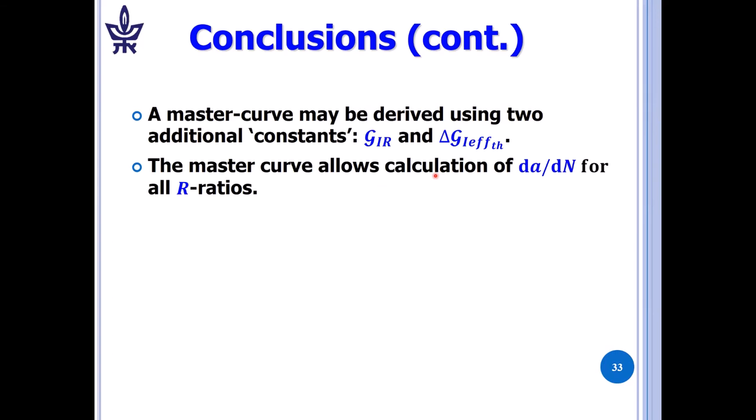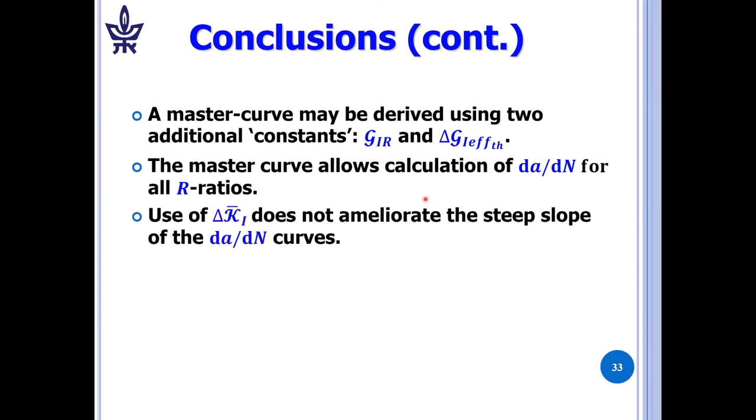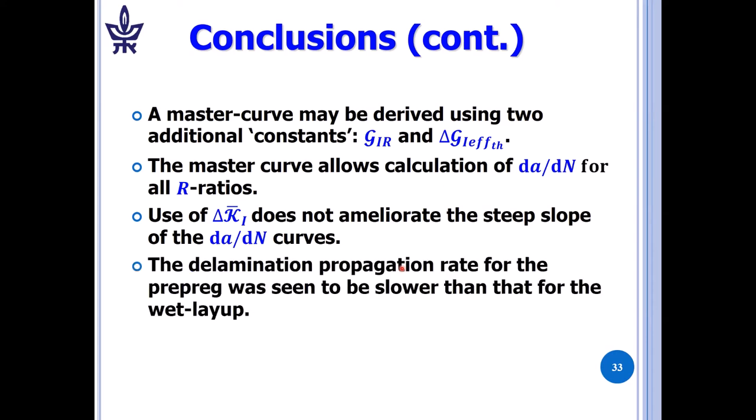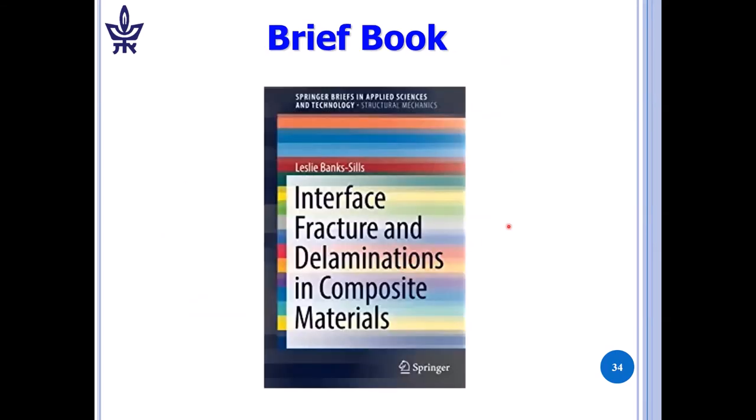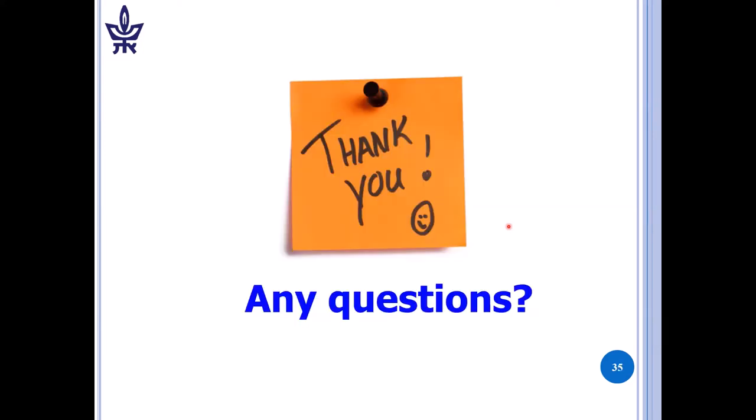The master curve allows calculation of da/dN for all R ratios, and that's the big advantage of the master curve. Use of delta K1 does not ameliorate the steep slope of the da/dN curves. I still think that we have a big question how we can apply this knowledge to damage tolerance philosophy. The delamination propagation rate for the prepreg was seen to be slower than that for the wet layup. May I suggest to you a book which was published in 2018 on interface fracture and delaminations in composite materials. I thank you and I'll be happy to answer any questions that you may have.